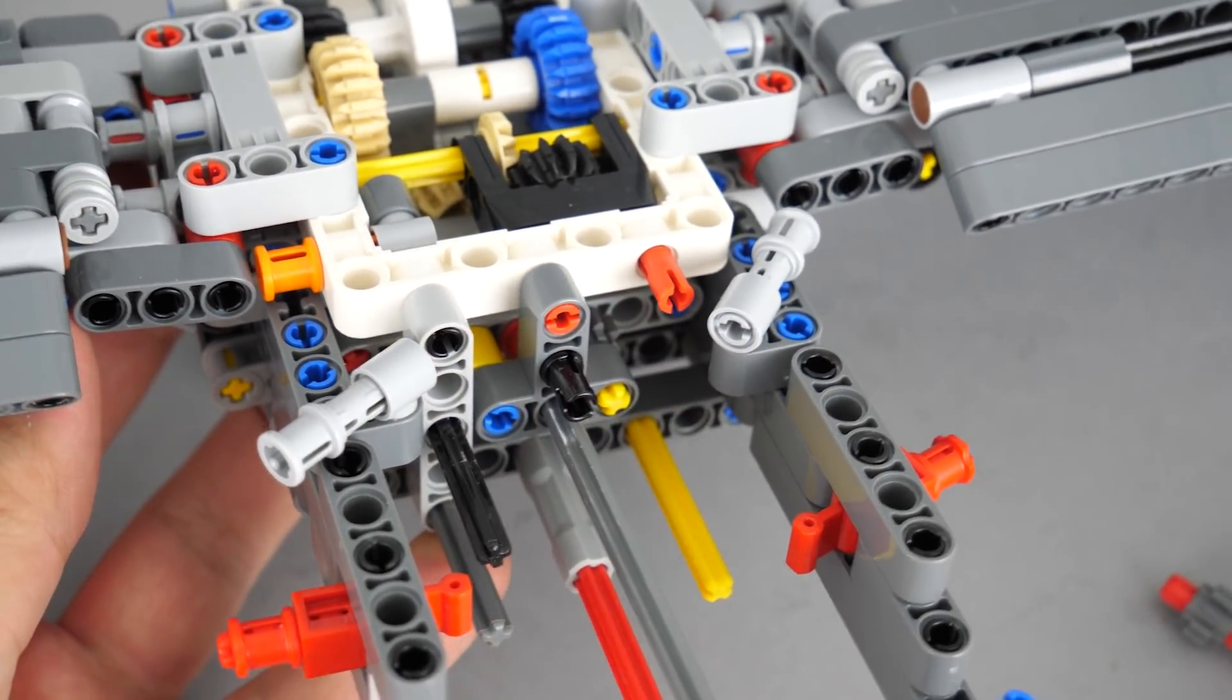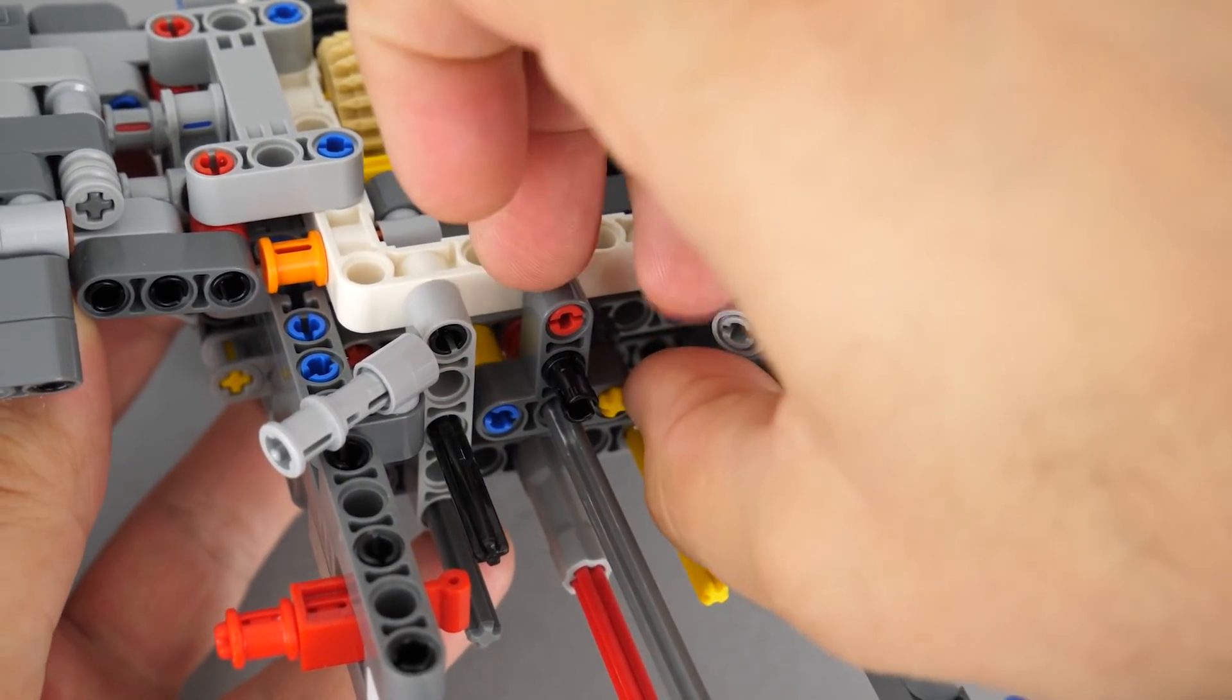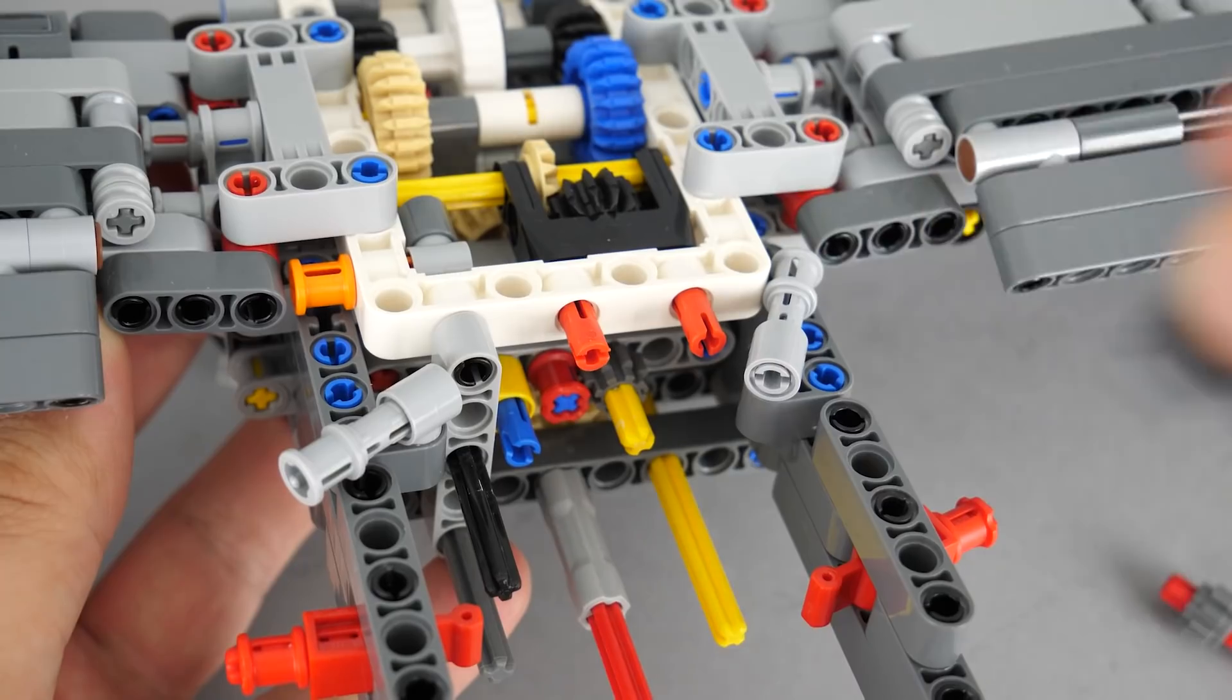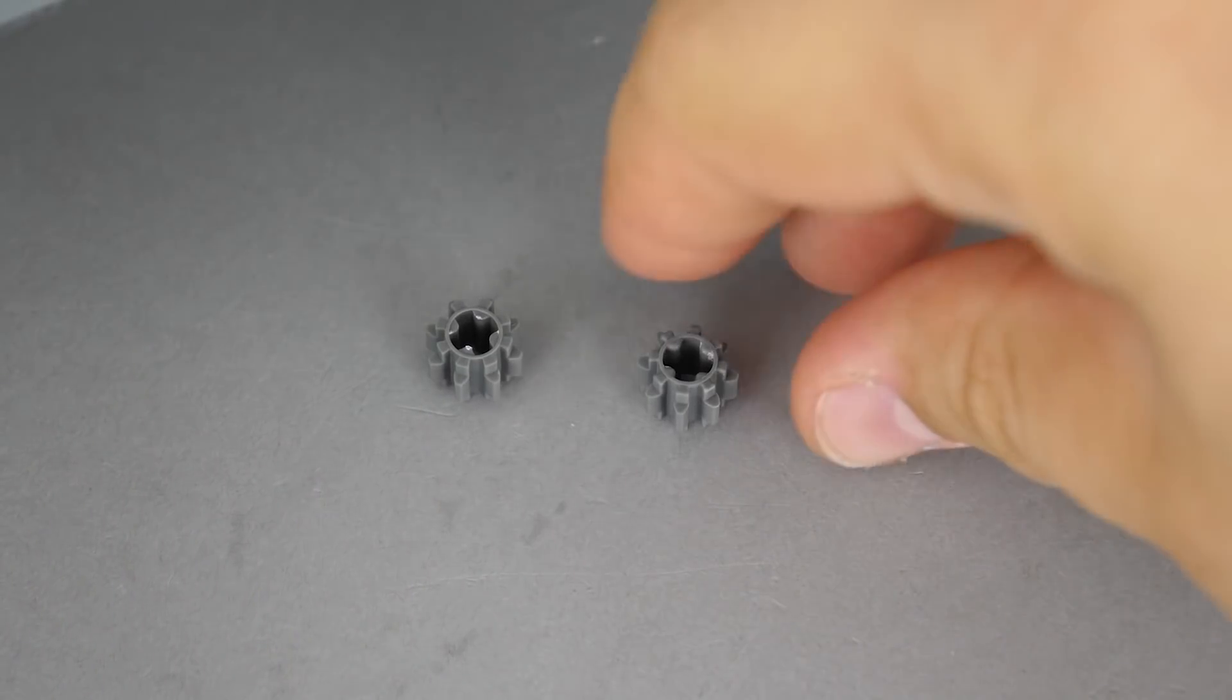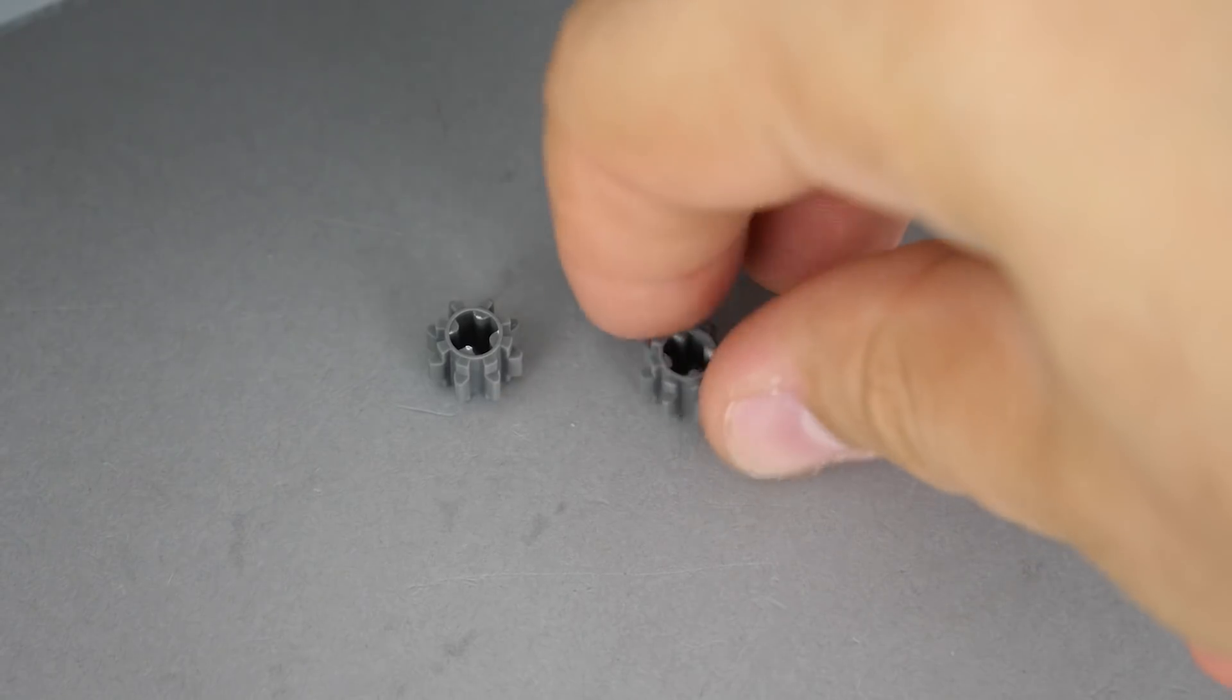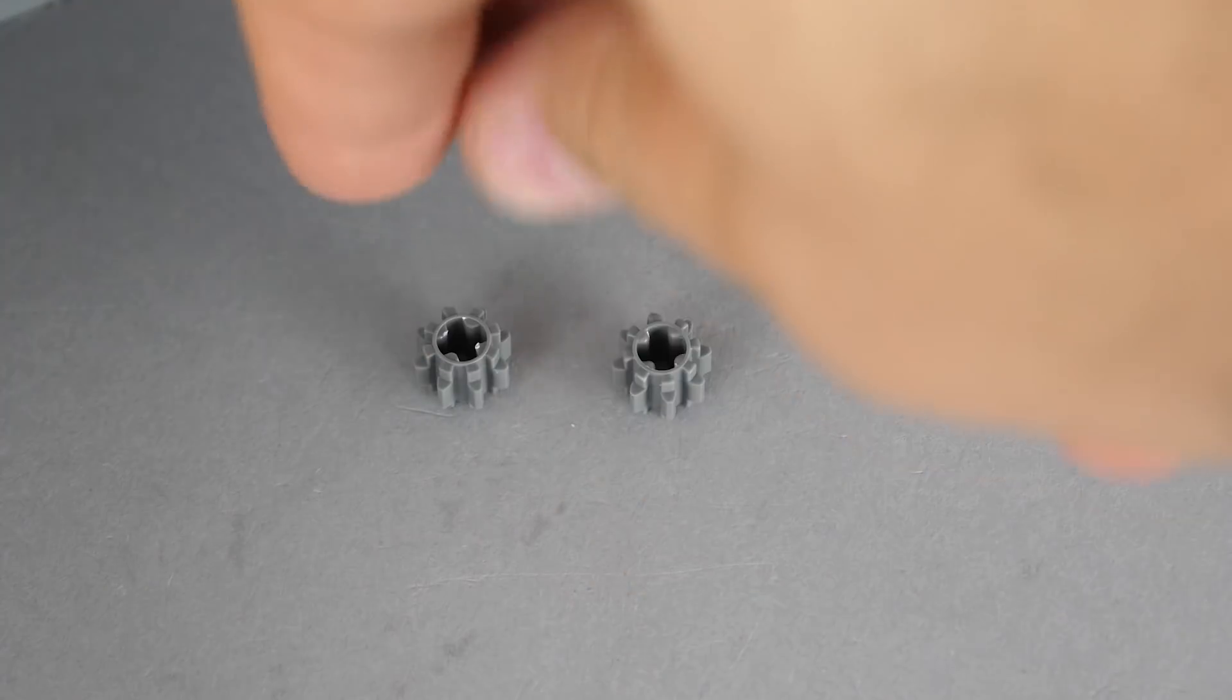As it turns out there are 2 other 8-tooth gears in the system, and despite not having visible damage they also had to be replaced to make the system properly functioning again. If they are damaged then they can make the other 3 8-tooth gears get stuck more quickly, and they get damaged too.